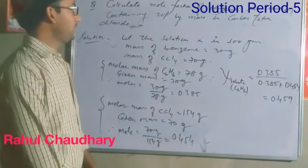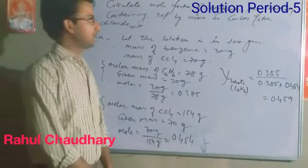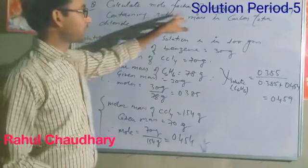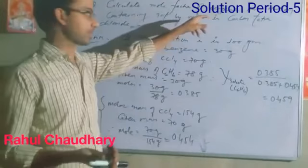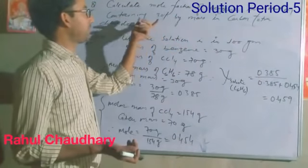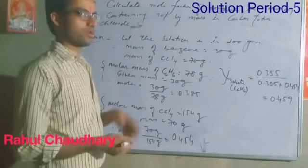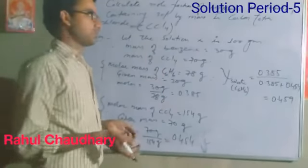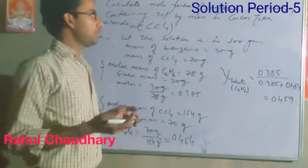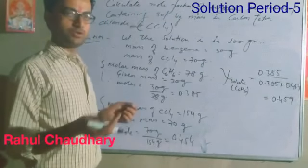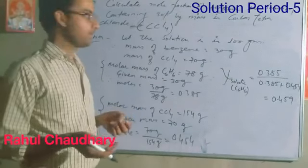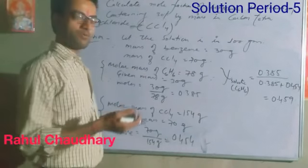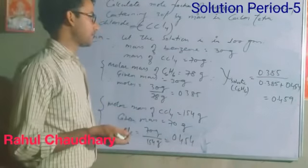Let us consider an NCERT example to calculate the mole fraction. The question is: calculate the mole fraction of benzene in a solution containing 30% by mass benzene in carbon tetrachloride, CCl4. Benzene is the solute and carbon tetrachloride is the solvent. The formula of benzene is C6H6.